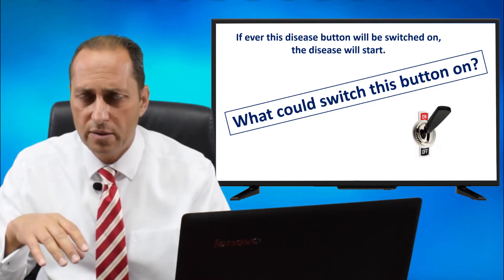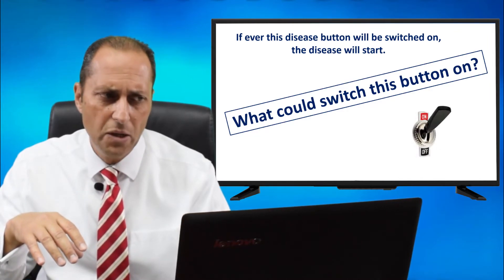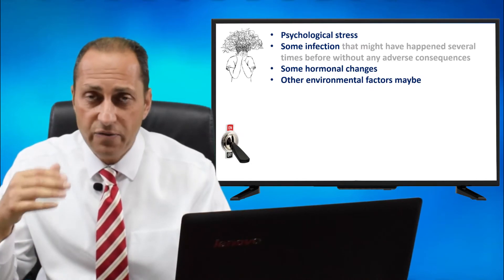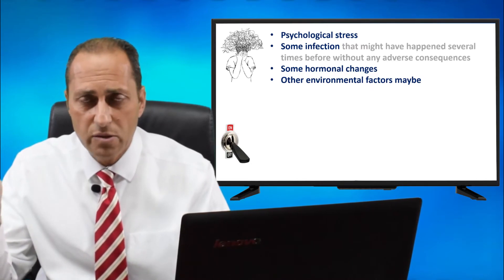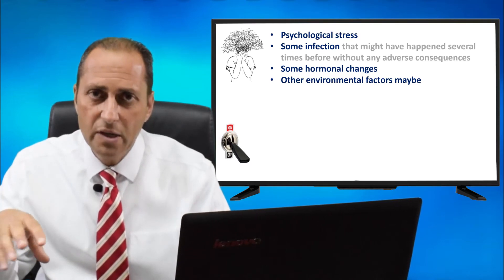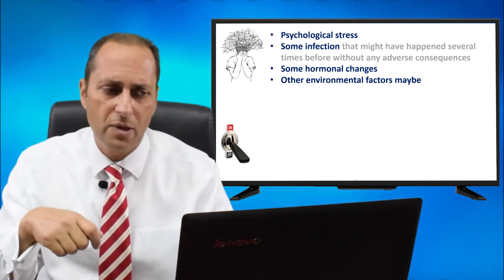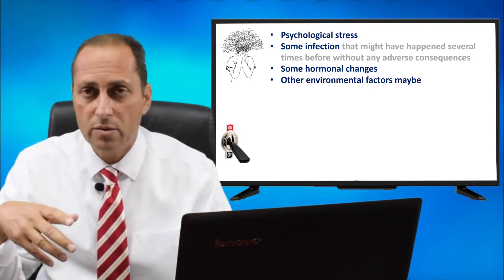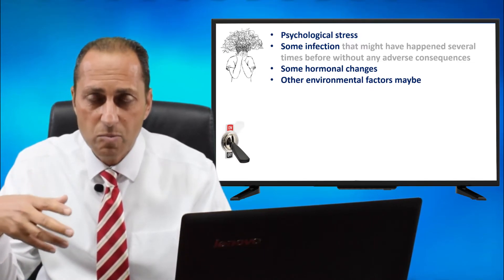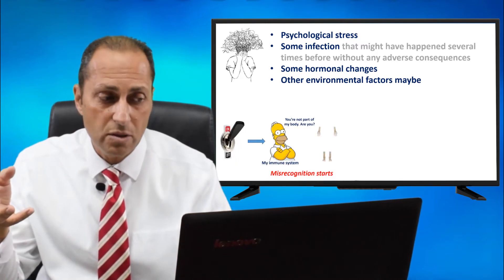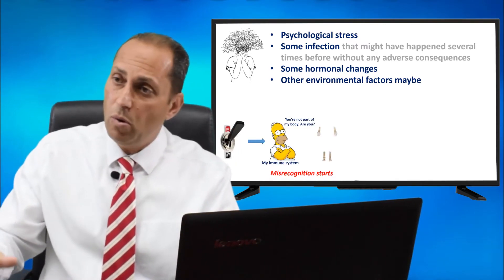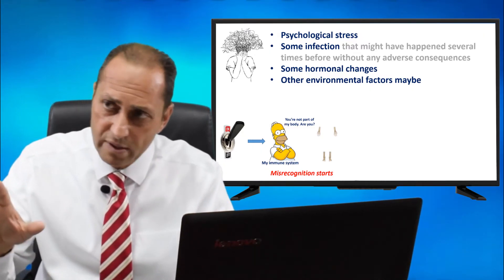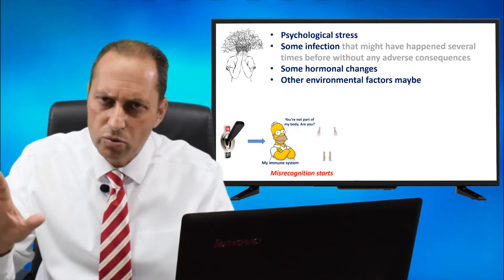What could switch on this button? Well, psychological stress may switch it on. Some infection — an infection you may have had several times in your life before, but this time it chose to switch on the button. Some hormonal changes, other environmental factors — any one of those can switch on the button. What happens when the button is switched on is the misrecognition starts. The immune system looks at your joints and says, 'I don't know you.' It used to know them before, but now with the button switched on — 'Who are you? I don't know you.'